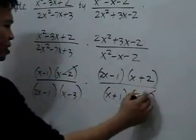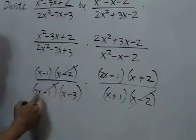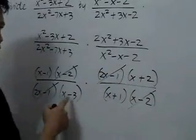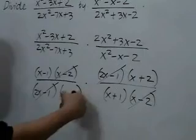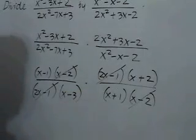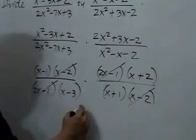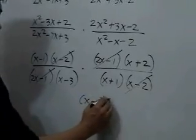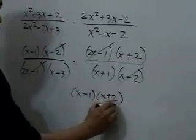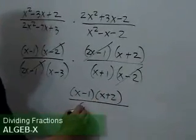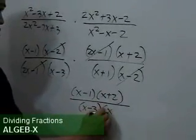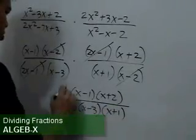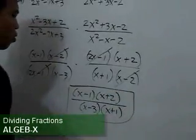This (x-2) by this (x-2), (2x-1) by (2x-1). No more common factors. So the product is (x-1) times (x+2) all over (x-3) times (x+1).